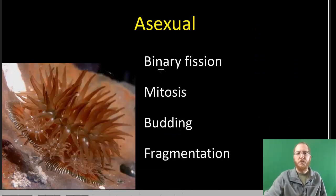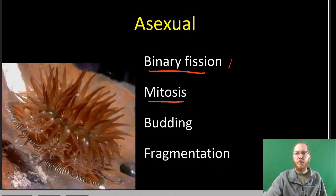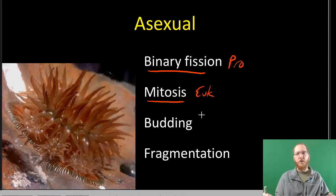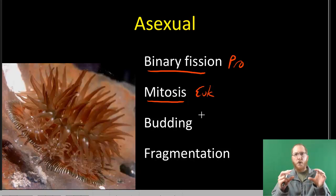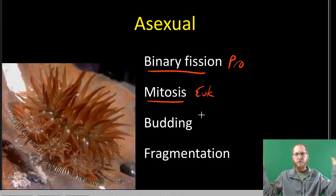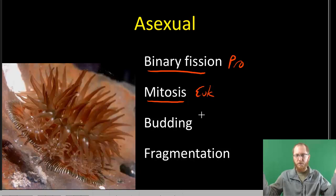For asexual reproduction, there are multiple types. You've got binary fission and mitosis. Binary fission is for prokaryotes; mitosis is kind of the equivalent for eukaryotes. This one goes from one cell — split it — two cells. Pretty straightforward: clones.